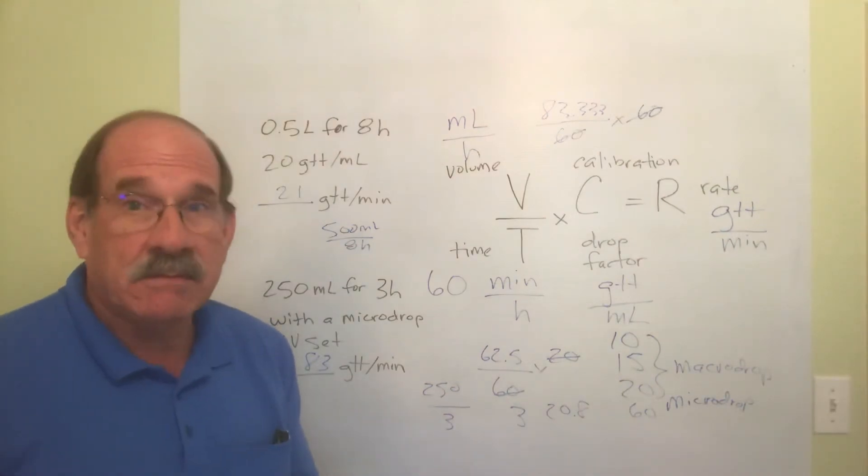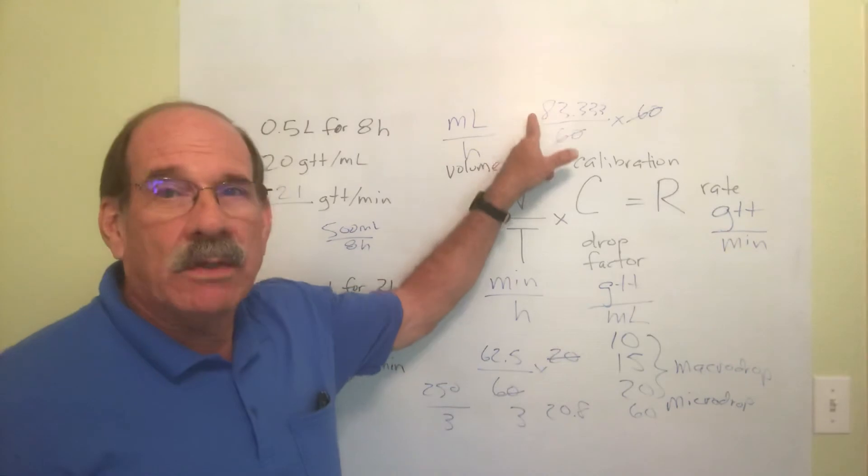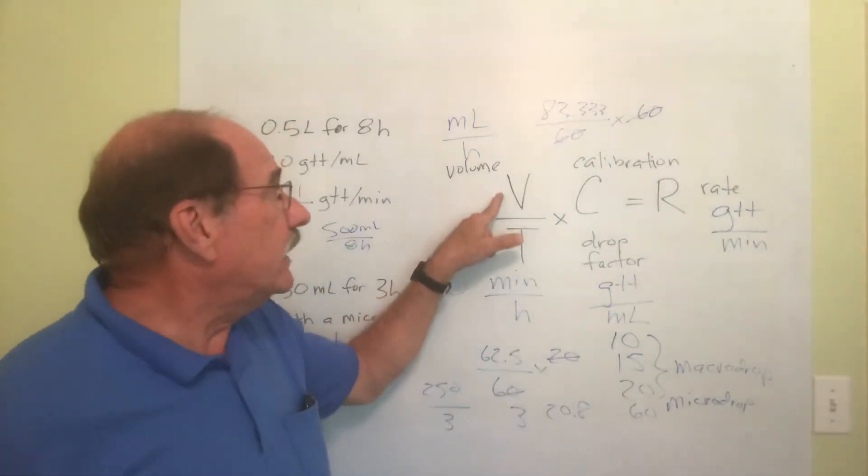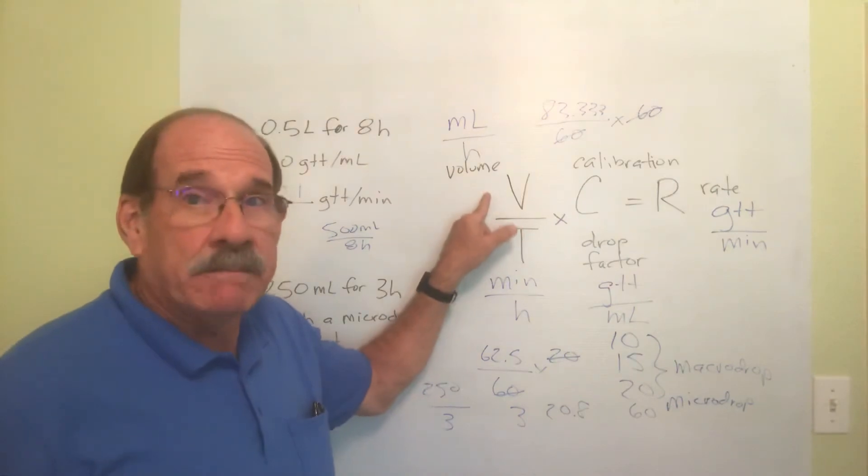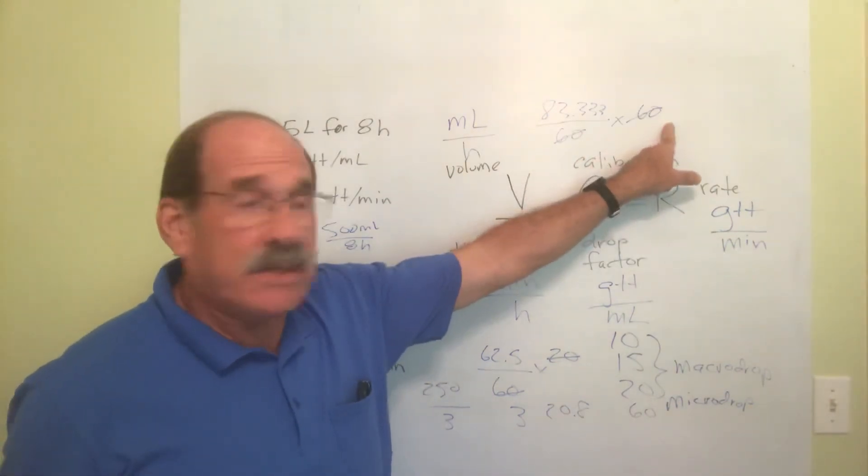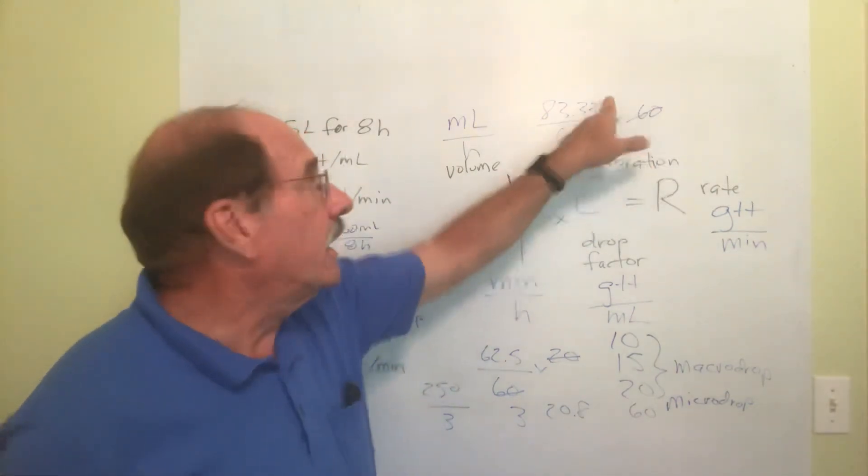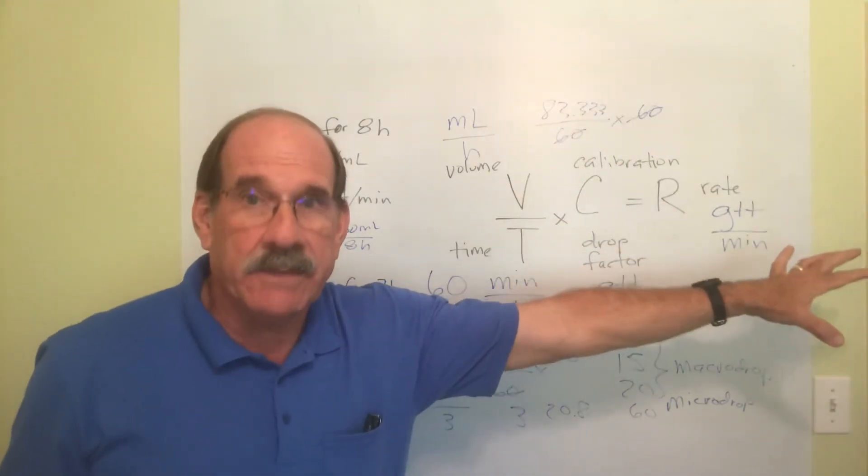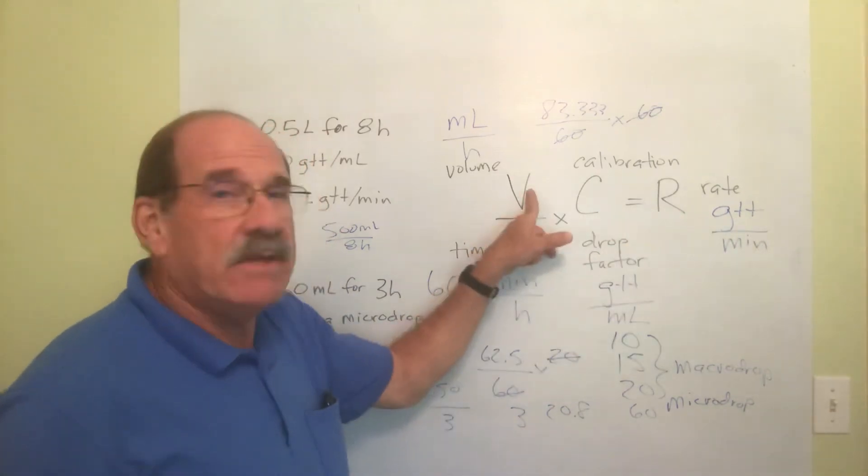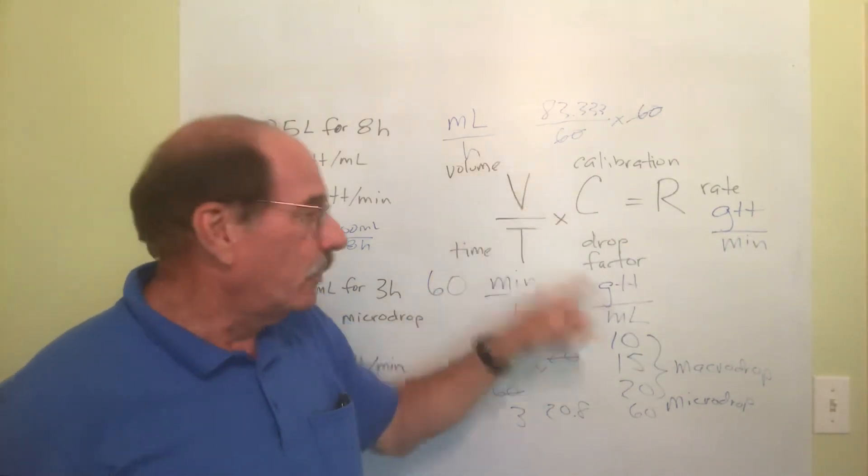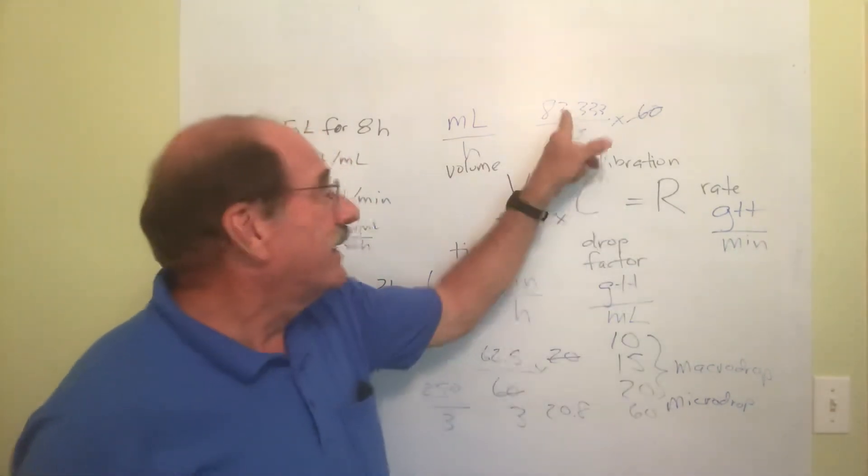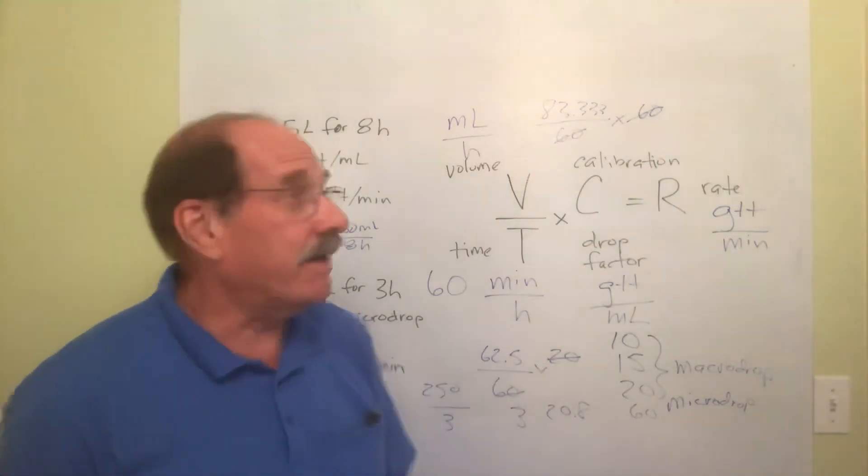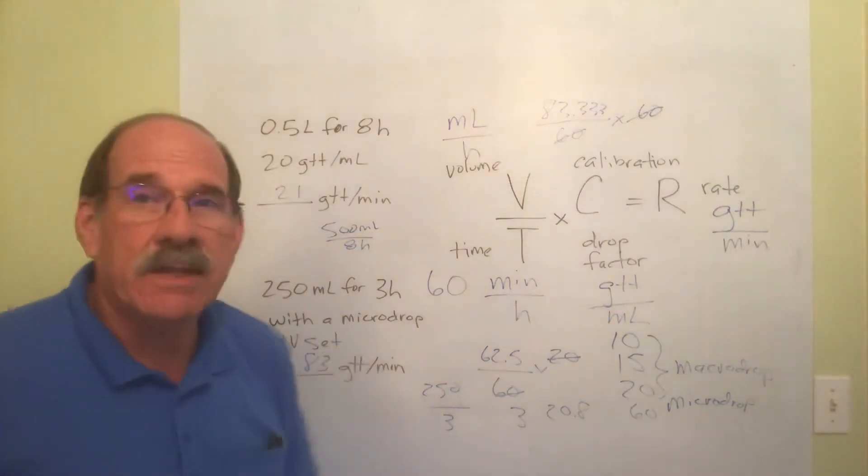Realize something very simple here. This 83 point blah blah blah is the number of milliliters per hour, that's V. But when this number is 60, the 60s cancel out and this number also becomes the final answer. Hope you saw what I just said there. So whatever the V is in milliliters per hour with a micro drop IV set, that number becomes the final answer in drops per minute. So I'm going to count how many drops per minute? 83 and count: one, two, three. I got it.